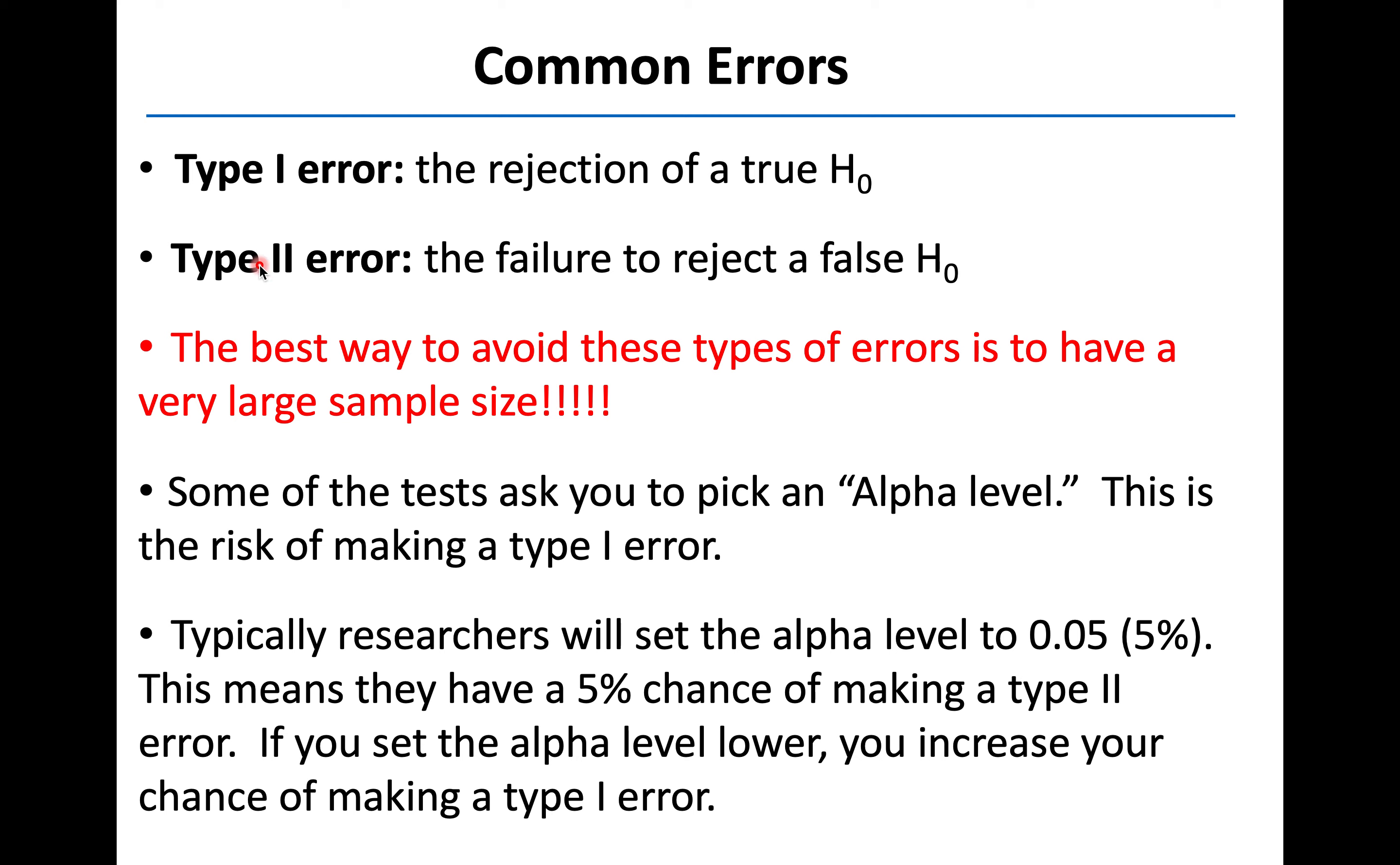And then a type 2 error is failure to reject a false null hypothesis. It seems like a lot of double negatives or a double negative there. Failure to reject a false null hypothesis. It's a little confusing, but it's going to be the opposite of a type 1 error. So we're thinking there's no difference when there actually is something significant going on.